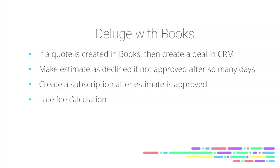Moving into the back office — Zoho Books — there are a bunch of really cool use cases. If a quote is created from Books, we can then automatically create a deal in CRM. If we have an estimate that we've sent to someone and a week has passed, we can mark that estimate as declined — because had it been accepted, it would have been accepted — and then send out another estimate or get back in contact with that person. If we send an estimate and it gets approved, we could then create a subscription for them if we have a subscription model business. And of course there are late fee calculations that you can automatically apply depending on some criteria.